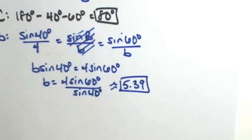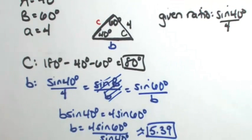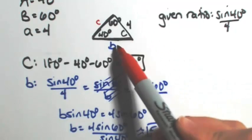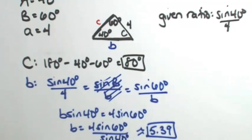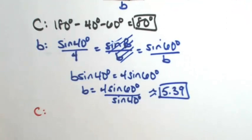One more side to find, which is side c. Keep in mind this is not a right triangle, so Pythagorean Theorem does not apply. I can't do 4 squared plus b squared equals c squared because this is not a right triangle. So once again, I'm going to use the Law of Sines to find side c.